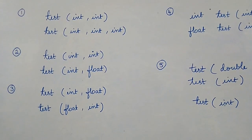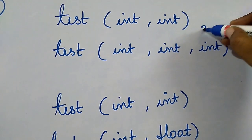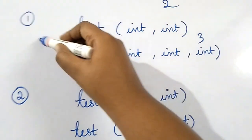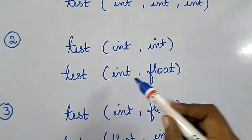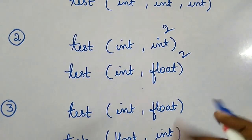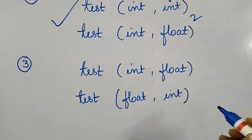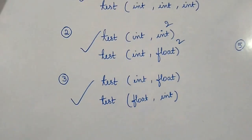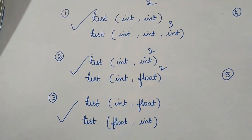Now let's see valid and invalid cases of overloading. Valid case 1: two methods where one has two arguments and the other has three — variation in parameter count makes this valid. Valid case 2: one method has two ints, the other has int and float — they differ in type. Valid case 3: one method has (int, float) and the other has (float, int) — a change in the order of arguments is also a valid overloading case.